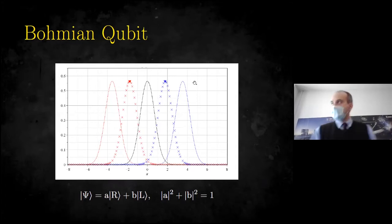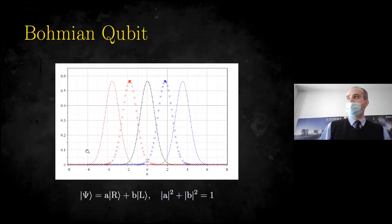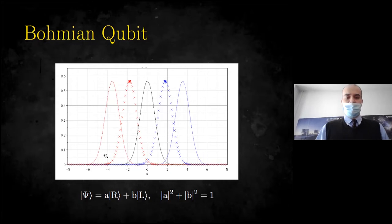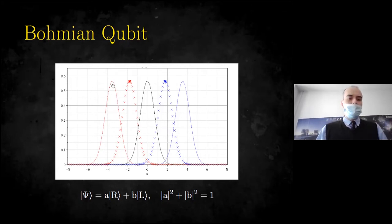Our Bohmian qubit is described as a superposition between what we call the right state and left state. The right state is a Gaussian which starts on the right side of the center of oscillation at t=0, and the left state is another Gaussian. These two Gaussians move in configuration space over time. If properly engineered, the inner product of their corresponding wave functions is very close to zero — they can be made orthogonal with arbitrary accuracy, so they define the basis states of a qubit.